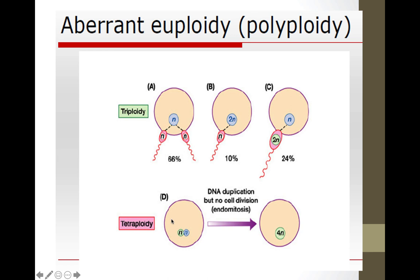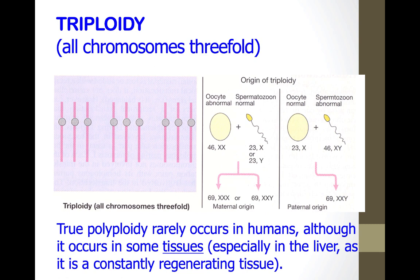In tetraploidy, you would have a tetraploid ovum that duplicates all its sets again without cell division, giving 4n. Triploidy — all chromosomes threefold — rarely occurs in humans, although it occurs in some tissue types such as the liver as a regenerative tissue. A partial mole, a type of germ cell tumor, is one example where this can occur.